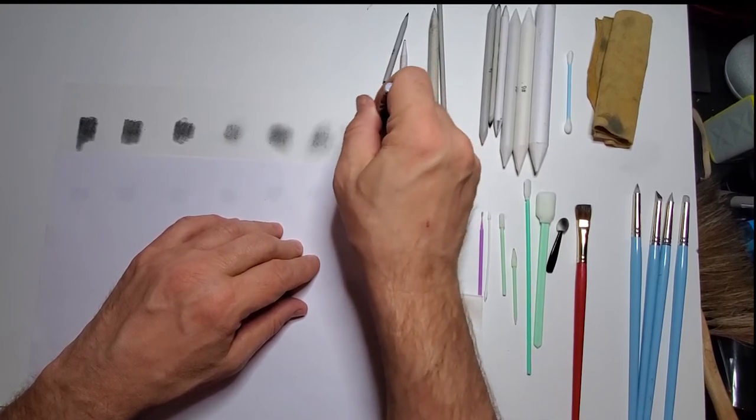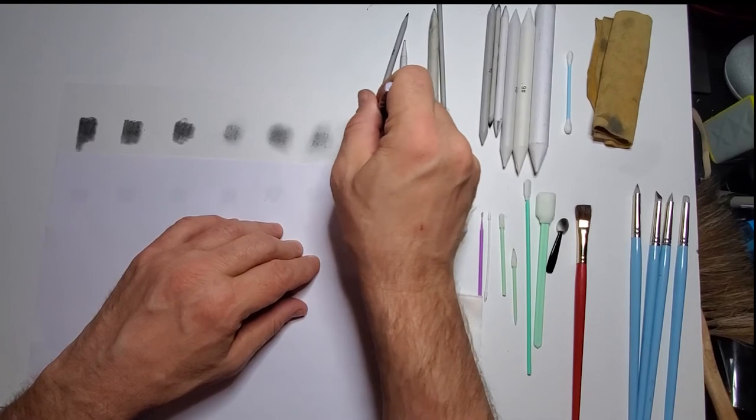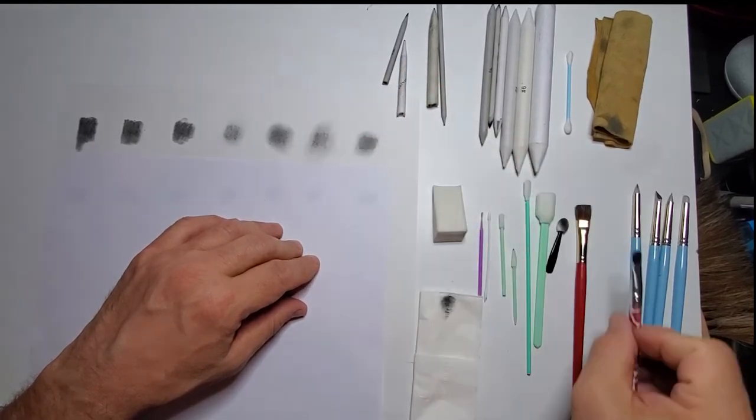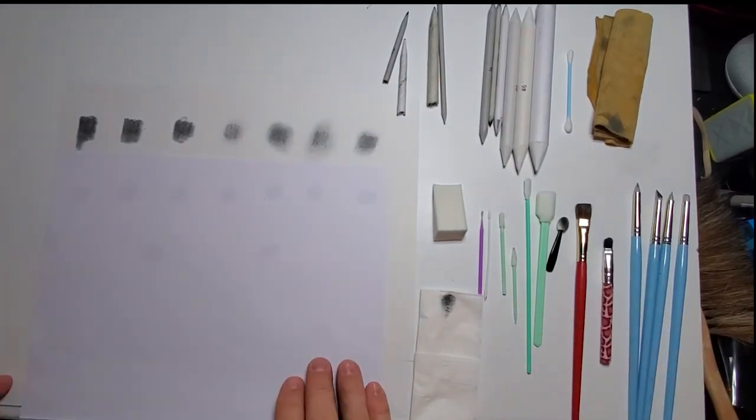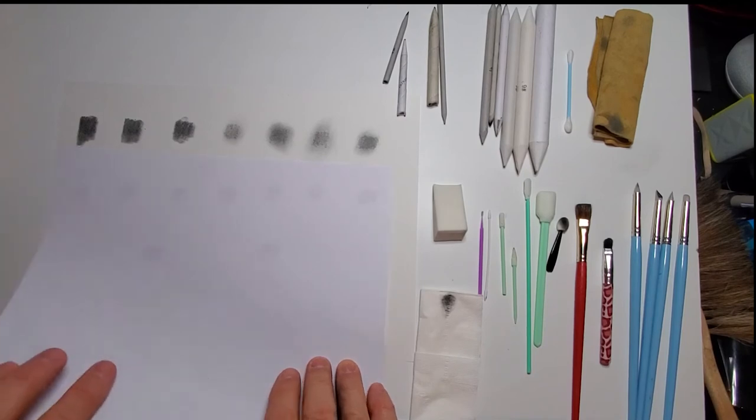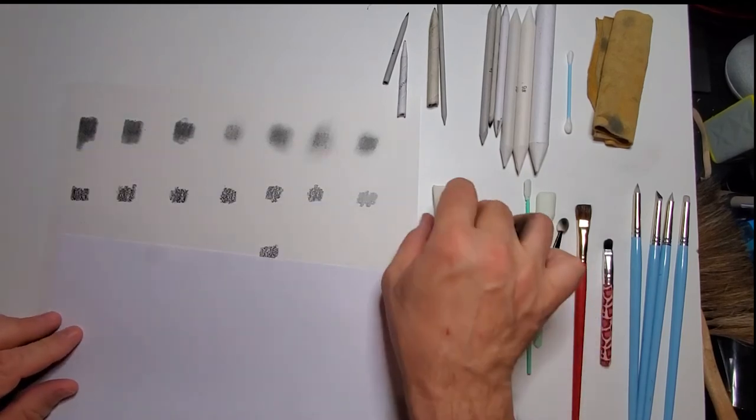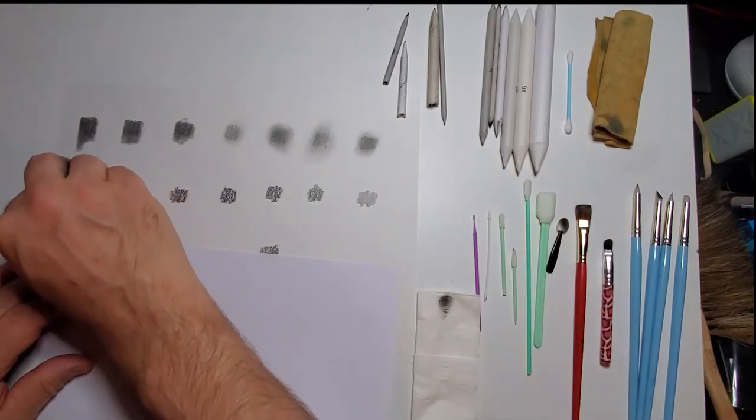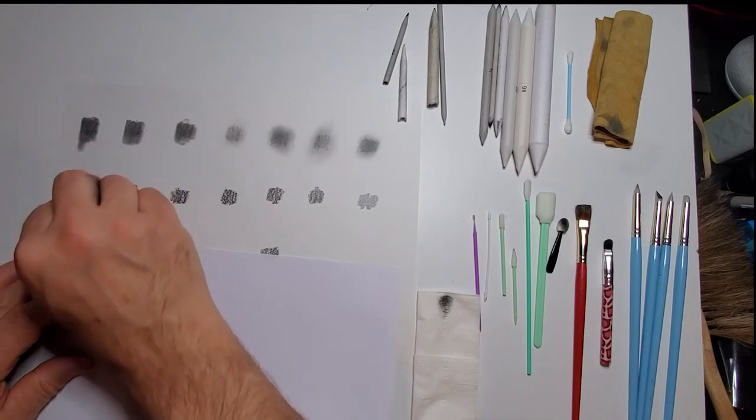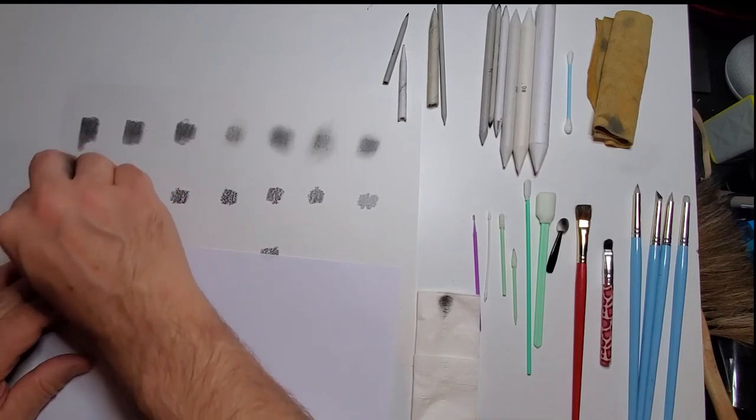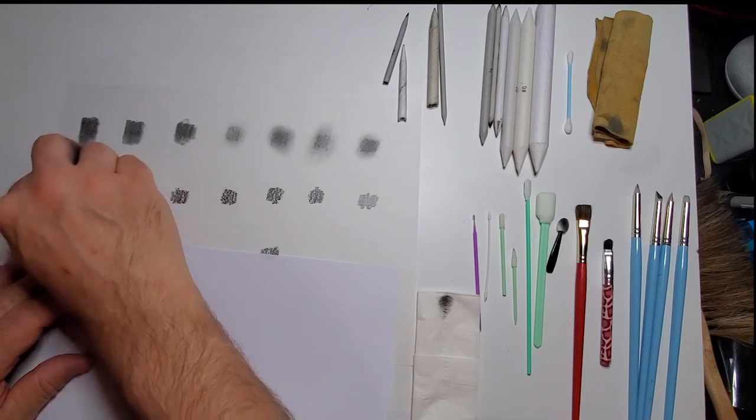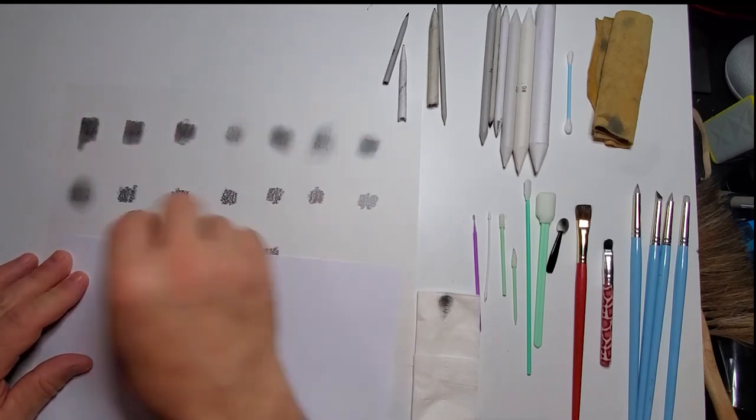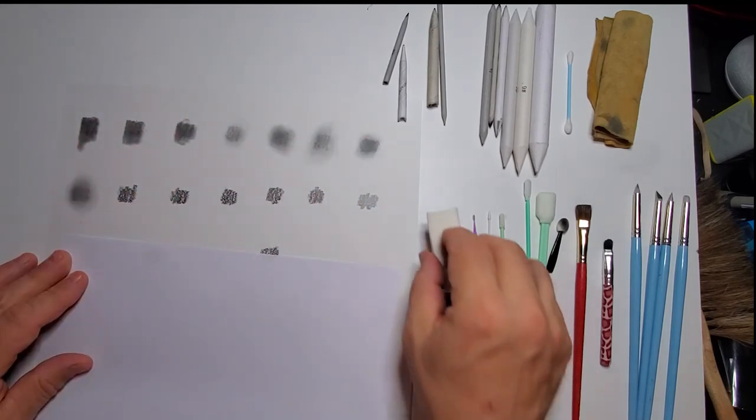Again, the same type of thing, a makeup brush. Again, you can get these at a dollar store. And then along with the makeup brush, we have a makeup sponge. Again, not very accurate, but if you have a large area you want to smooth out and blend, this does a real good job. You can see it almost erases it too, but it leaves a nice effect.